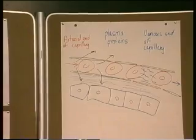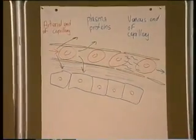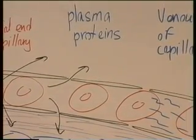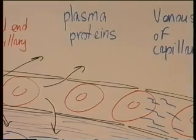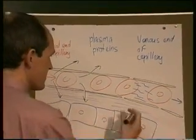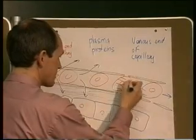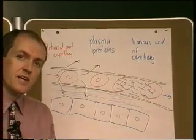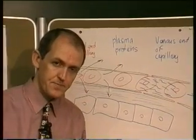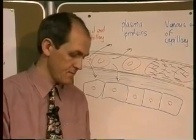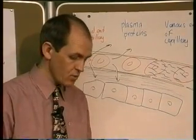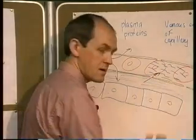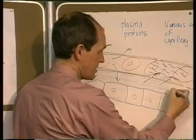Plasma protein molecules are found in the plasma. These plasma protein molecules take up space that would otherwise be occupied by water molecules. Therefore, they exert an osmotic suction, and the net result is that water molecules tend to move from the tissue fluid back into the capillary.